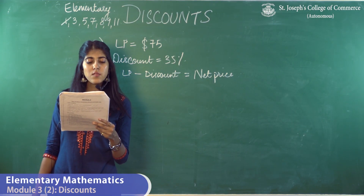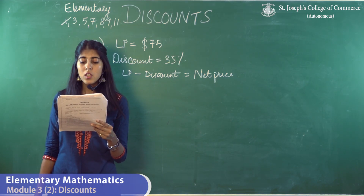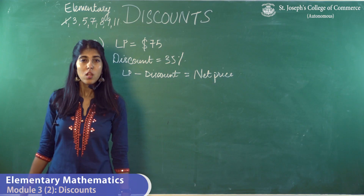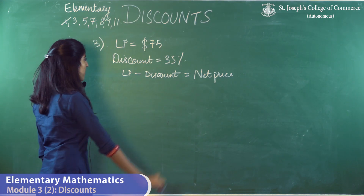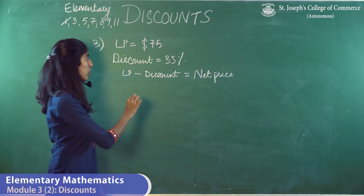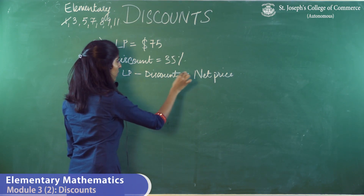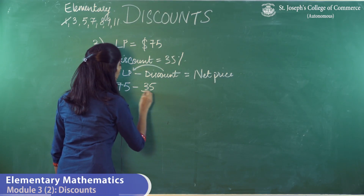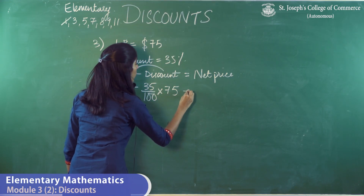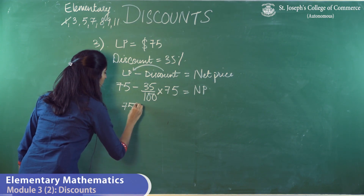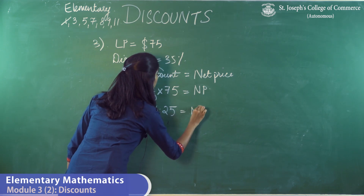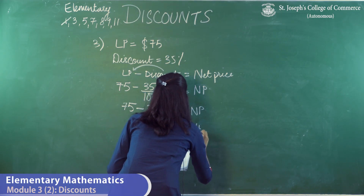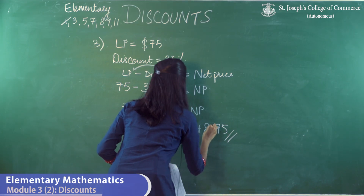Moving on to the third question: Jane's variety store places a $75 order for candy. If the store receives a 35% discount from the candy wholesaler, what is the net price? List price is $75, discount rate is 35%. Using the formula: $75 minus 35% of $75 equals $75 minus $26.25. Therefore the net price is $48.75.